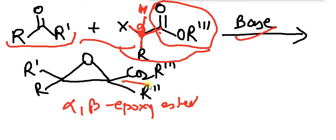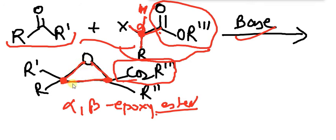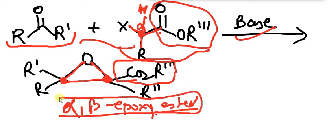You can see that this compound has an ester functional group. At the alpha and beta positions there is an epoxy group — a three-membered ring containing oxygen. This is called alpha-beta epoxy ester. So the product is a compound that contains an ester functional group and an epoxy group at the alpha-beta position. I hope that is clear.